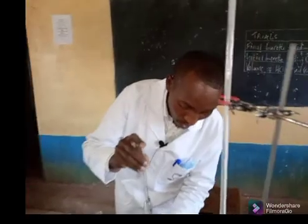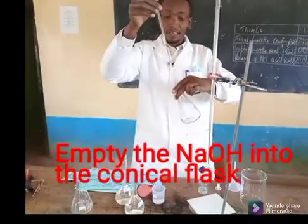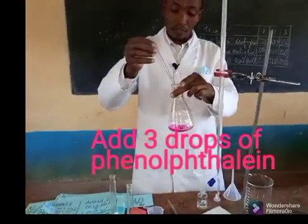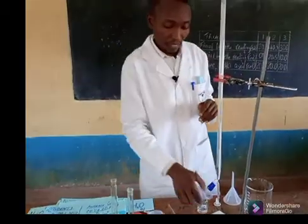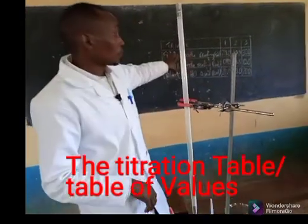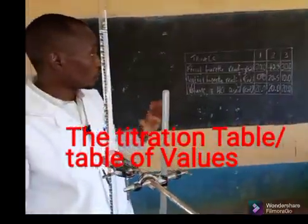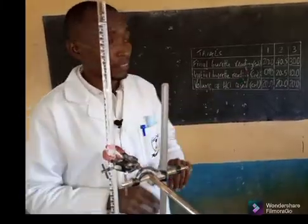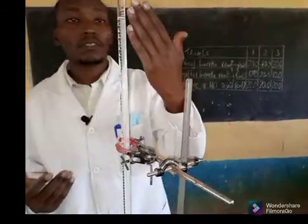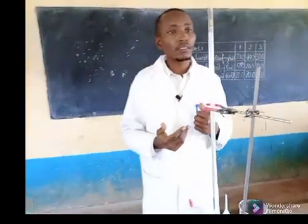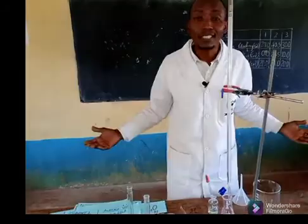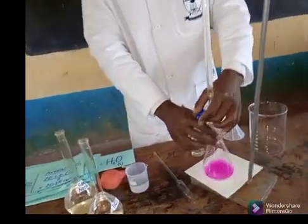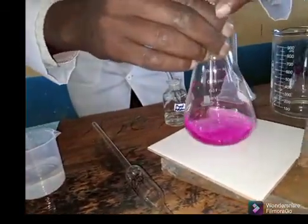I will empty the sodium hydroxide into a conical flask, then add three drops of phenolphthalein. It is picking up colour. Now I'm ready to start. Looking behind me, we have what you call the titration table. I have pre-done the trials but we can do one run and then go back to those figures. I have the hydrochloric acid in the burette and I'm ready to do a titration process. I will use my left hand for the tap and the right hand for the conical flask.